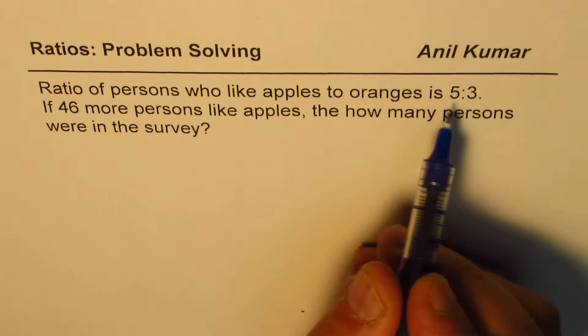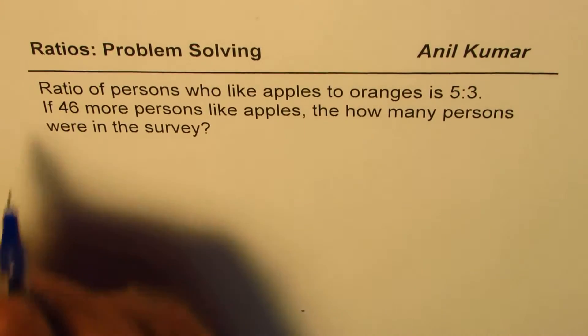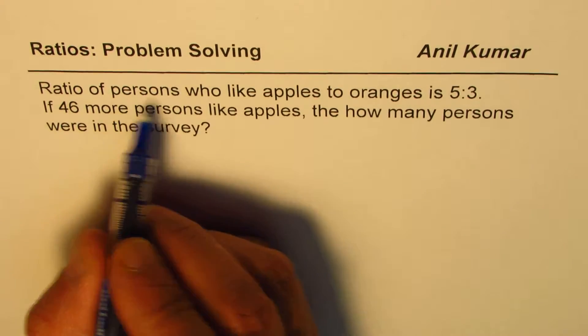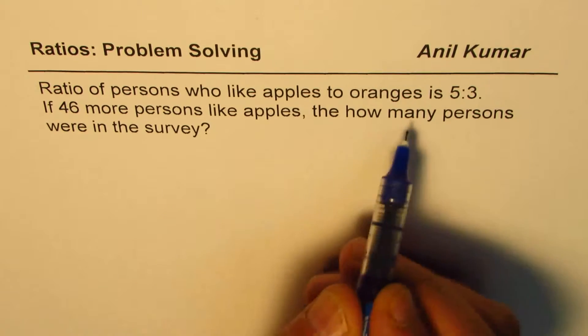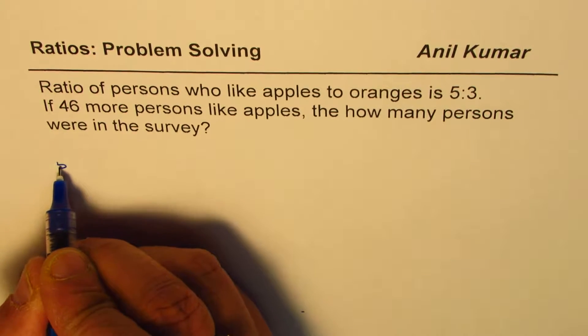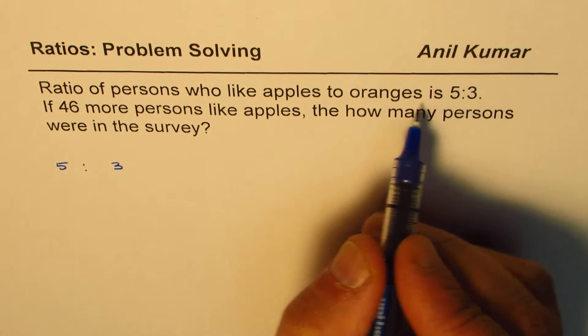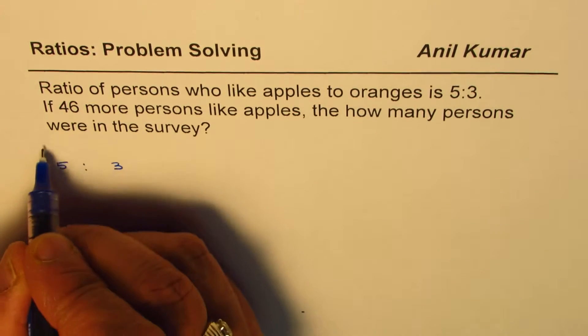Let's try to understand what ratio really means. So what we are saying here is that we want to relate ratio with number of persons surveyed. So whenever we say 5 is to 3, in this case we are saying apples to oranges.